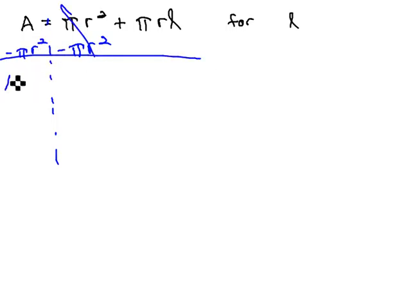We now have A minus pi r squared equals pi rl.